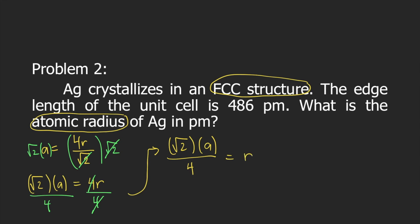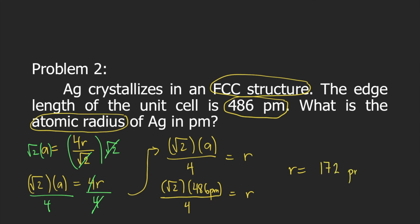Now that we have the equation for R, we can substitute the numbers. R is equal to square root of 2 times A, the edge length. The given edge length in the problem is 486 picometers. So, you put square root of 2 times 486 pm divided by 4. If you type this in your calculator, you can solve for R. And R is equal to 172 picometers. This is the radius of silver in picometers. Thank you.